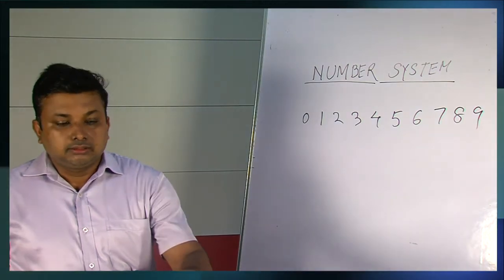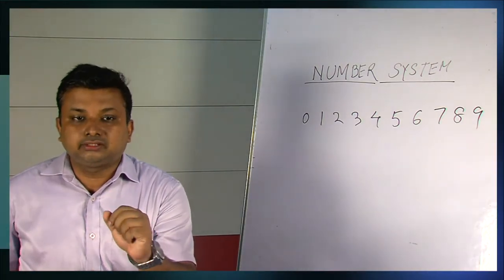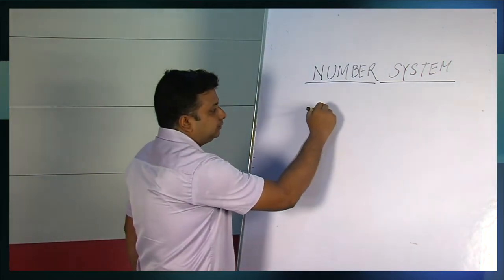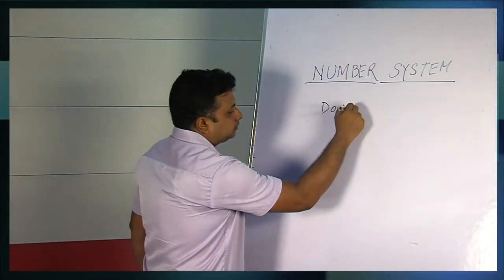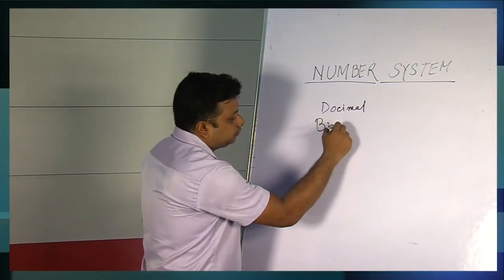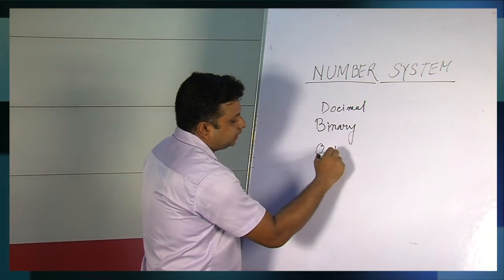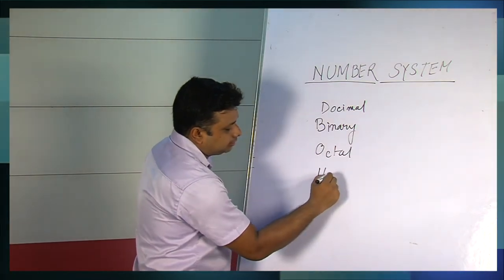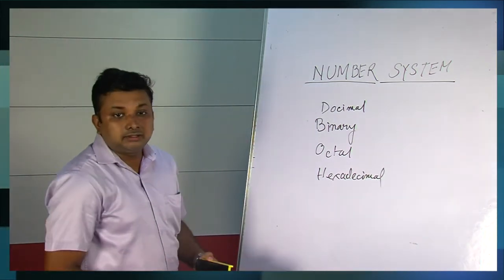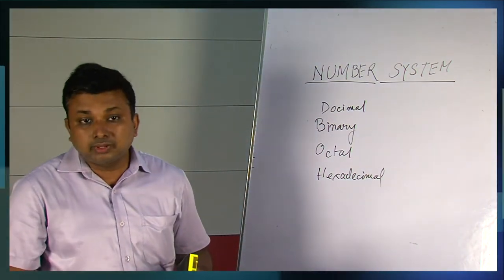Now we come to the categories of the number system. What are the different categories? The first one which I showed you, it was decimal, the most popular one. Then comes the most important one in computer system, binary. Then octal and hexadecimal. So these are the four categories of number system.